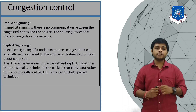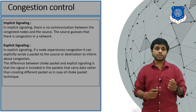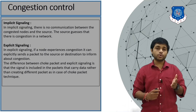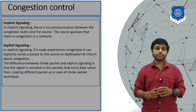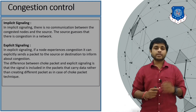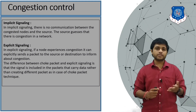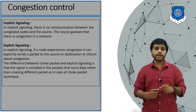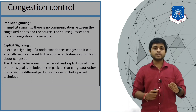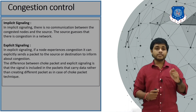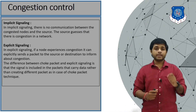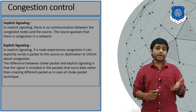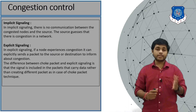The next type is explicit signaling. In explicit signaling, if a node experiences congestion, it can explicitly send a packet to the source or destination to inform about the congestion. The difference between explicit signaling and the choke packet is that in explicit signaling, the signal is included within the packet that carries the data. In the choke packet, a separate different packet is used to inform the sender about congestion.